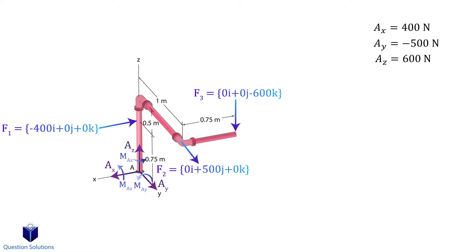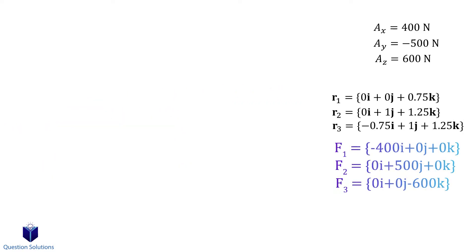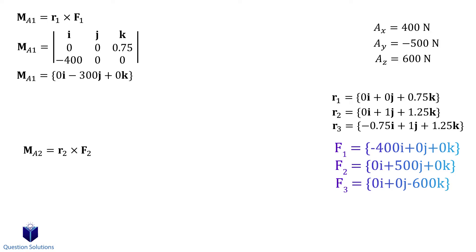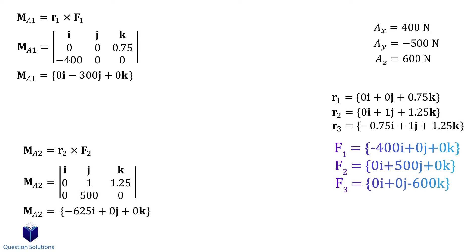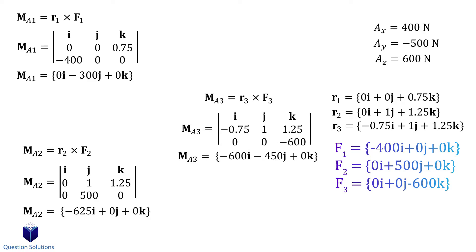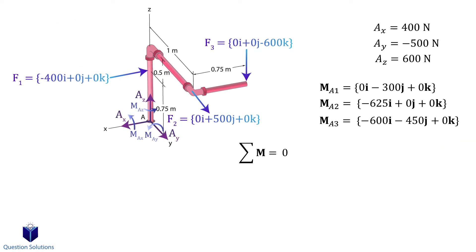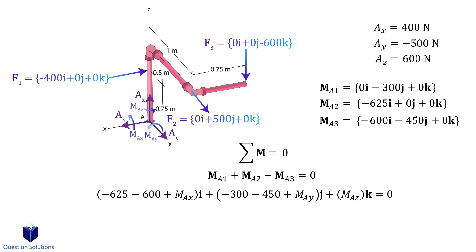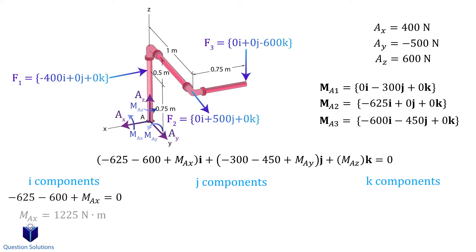Now we need to figure out the moment reactions about point A. To do that we calculate the moment created by each force about point A, so first we need position vectors from A to where each force is applied. We calculate the moment about A by the 400 newton force, then the 500 newton force, then the 600 newton force. All moments added together must equal zero, and we include the reaction moments at point A as well. Equating each component to zero and solving gives us our answers.